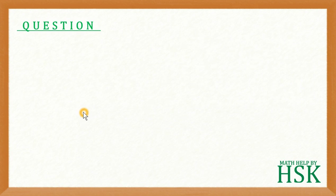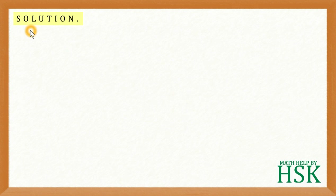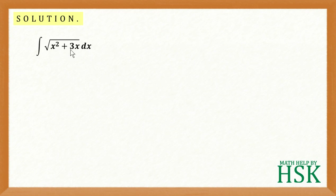Hello friends, the question is: we have to evaluate the value of the integration of the function square root of x squared plus 3x with respect to x. To solve this question, first of all we take the integral, that is square root of x squared plus 3x dx. We have been given a quadratic term inside the square root sign.